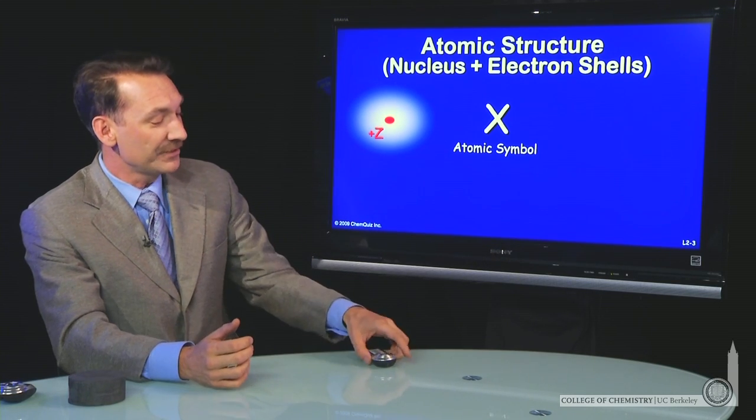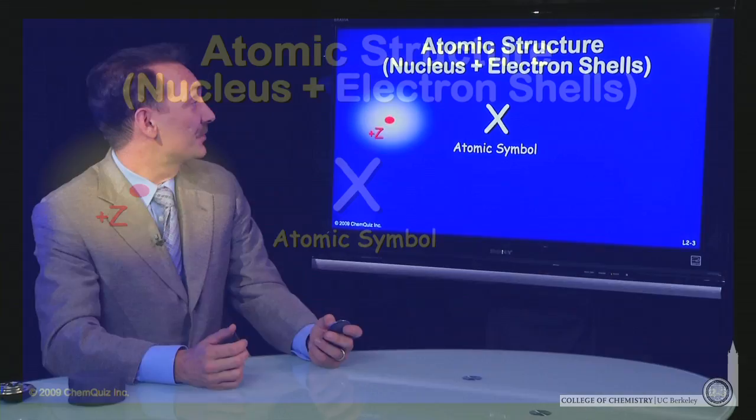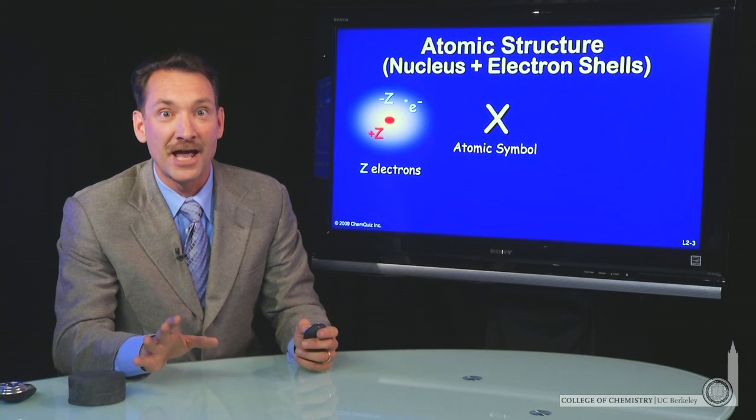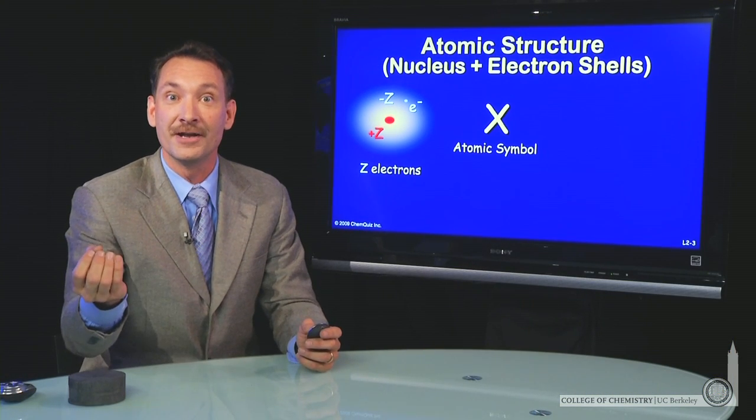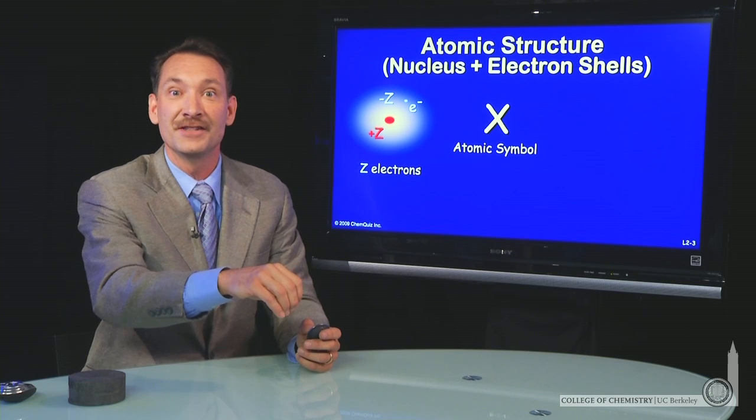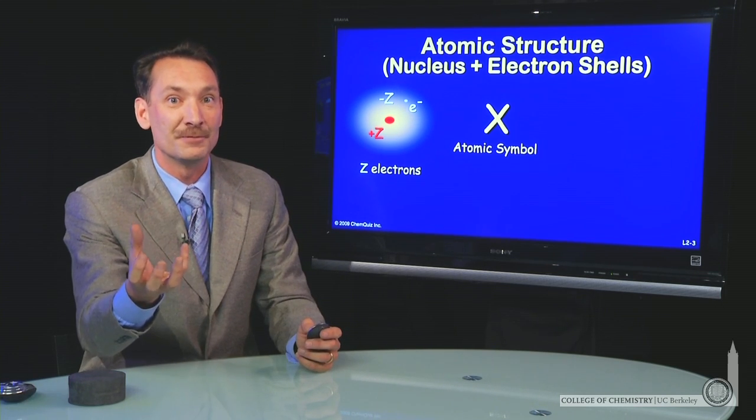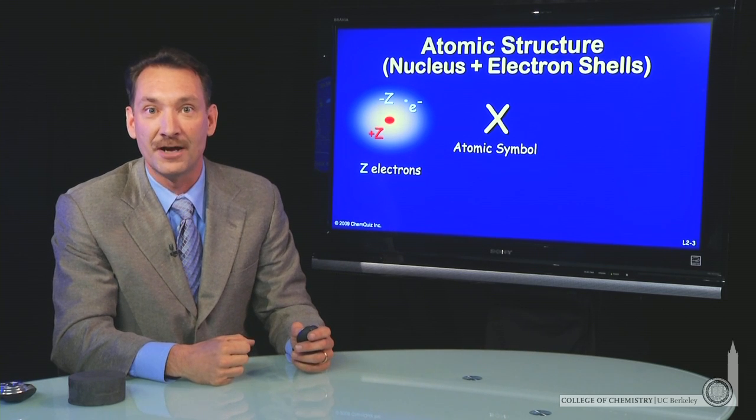Now, that positively charged nucleus is surrounded by electrons that are negatively charged. And in the neutral atom, there's an electron for every proton in the nucleus. That is, the charges balance out, so you have neutral atoms with an equal number of protons and electrons.